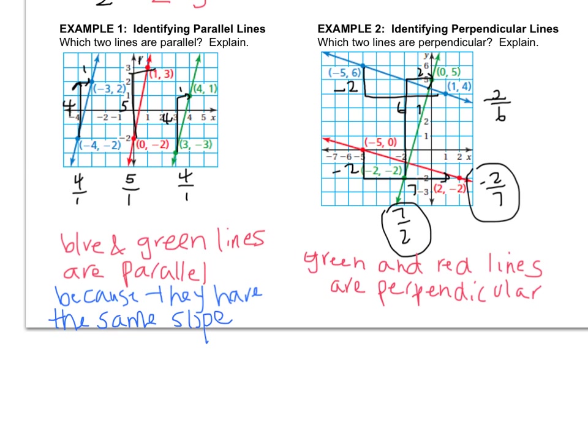And let's change example two to say green and red lines are perpendicular because their slopes are negative reciprocals. If you have any questions, write them down and ask me when you come to class.